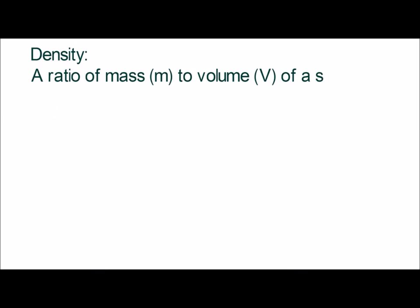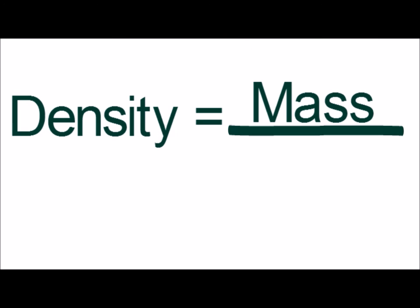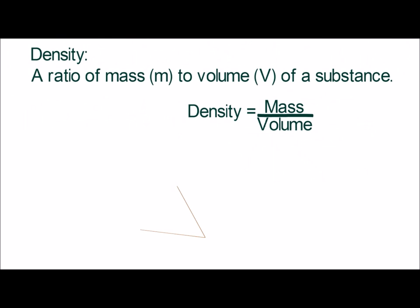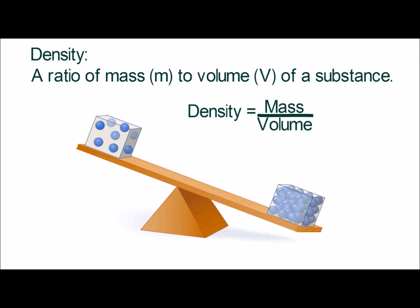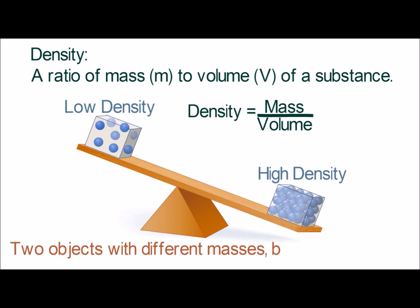Density is a ratio of mass to volume of a substance. Density is equal to the mass of an object divided by the amount of volume occupied by that object. A low density object will have a small mass and a large volume. A high density object will have a high mass and a small volume.